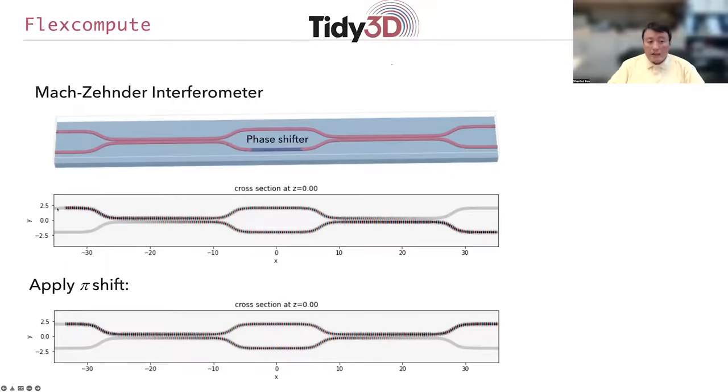When light is injected, for example, from the top waveguide here, it may either come out at the bottom waveguide or come out at the top waveguide.